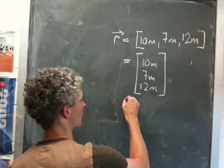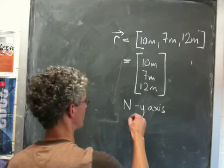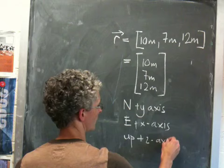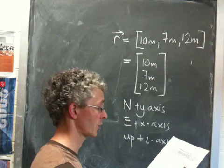we said in class that north is the y-axis in standard orientation, east is the x-axis, and up is the z-axis. So x, y, z—this is up.